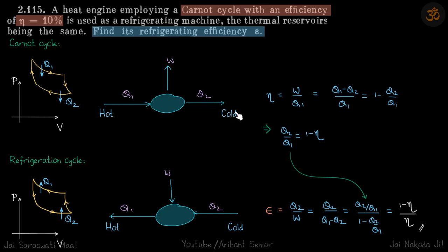Let's say this is a hot reservoir and a cold reservoir. The heat engine operates between them, taking Q1 heat from the hot reservoir and releasing Q2 into the cold reservoir.